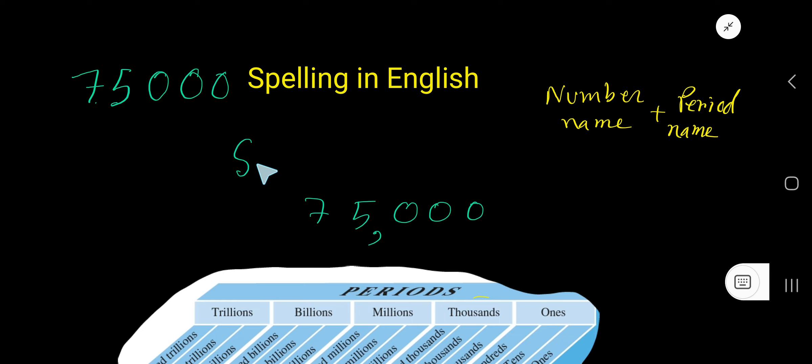So write here seventy-five. Then we have to write the period name. 75 is in thousands period, so write thousand. So this is 75,000. But from number 21 to 99 we use a hyphen, so write here a hyphen: seventy-five thousand.